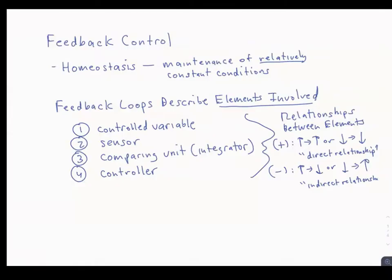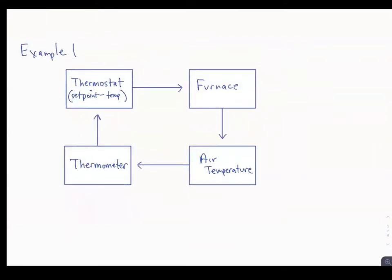The gain is the strength of a loop on the controlled variable, and that is something to consider when there are multiple loops. Looking at example number one: air temperature is the controlled variable, the thermometer is the sensor, the thermostat is the comparing unit, and the furnace is the controller.